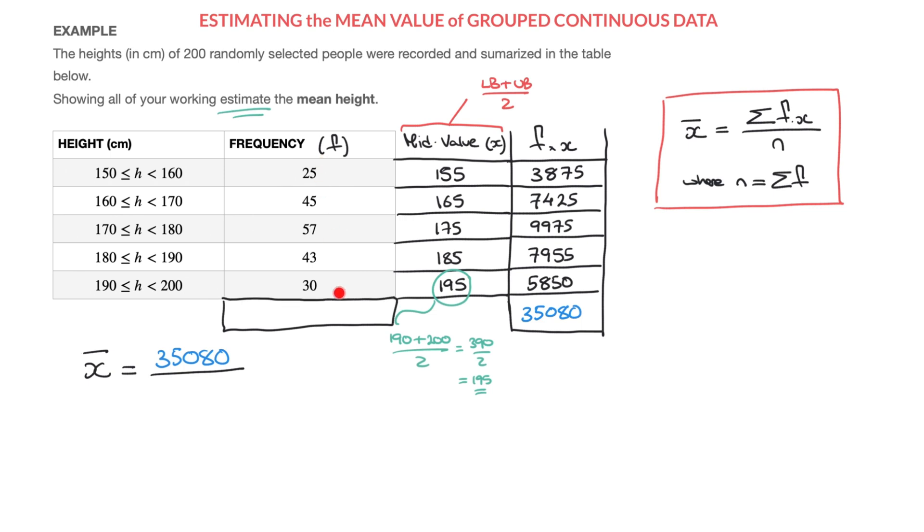Notice that these frequencies should add up to 200, since we were told that 200 people had been randomly selected. Nevertheless, it's worth checking. So on my calculator again, I'll go ahead and add all of these values. So that's 25 plus 45, plus 57.